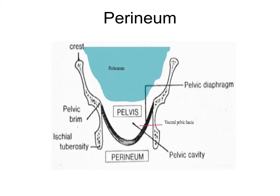The perineum is a space just below the pelvic cavity. This diagram is a coronal section of the pelvic cavity. You can see the pelvic floor, which is formed by the levator ani muscle and coccygeus. The space just below this is the perineum. Above that, the blue color indicates the abdominal cavity, which is lined by peritoneum.